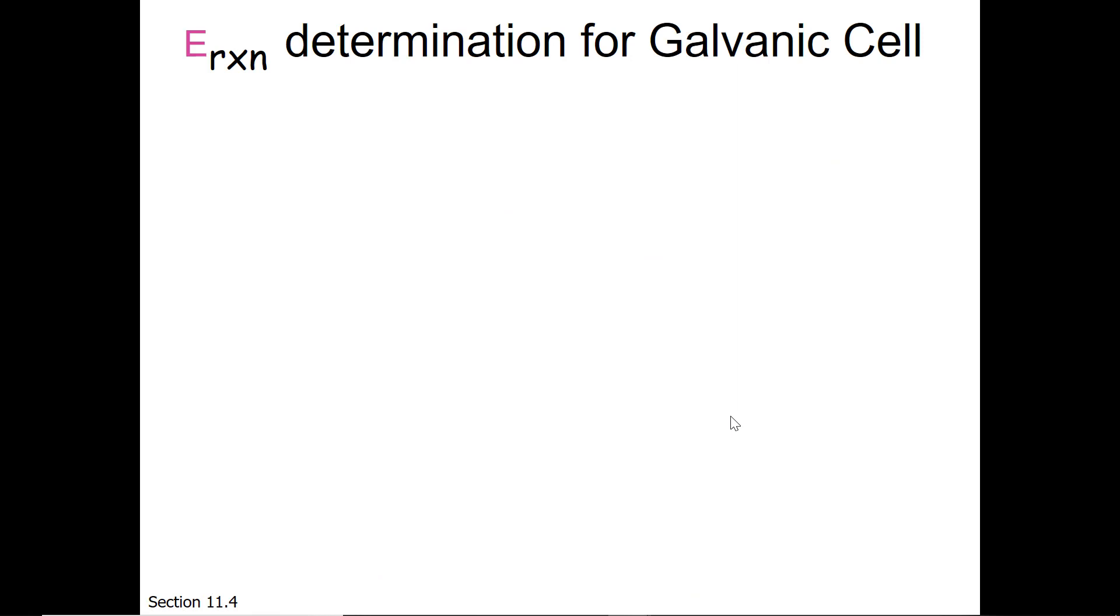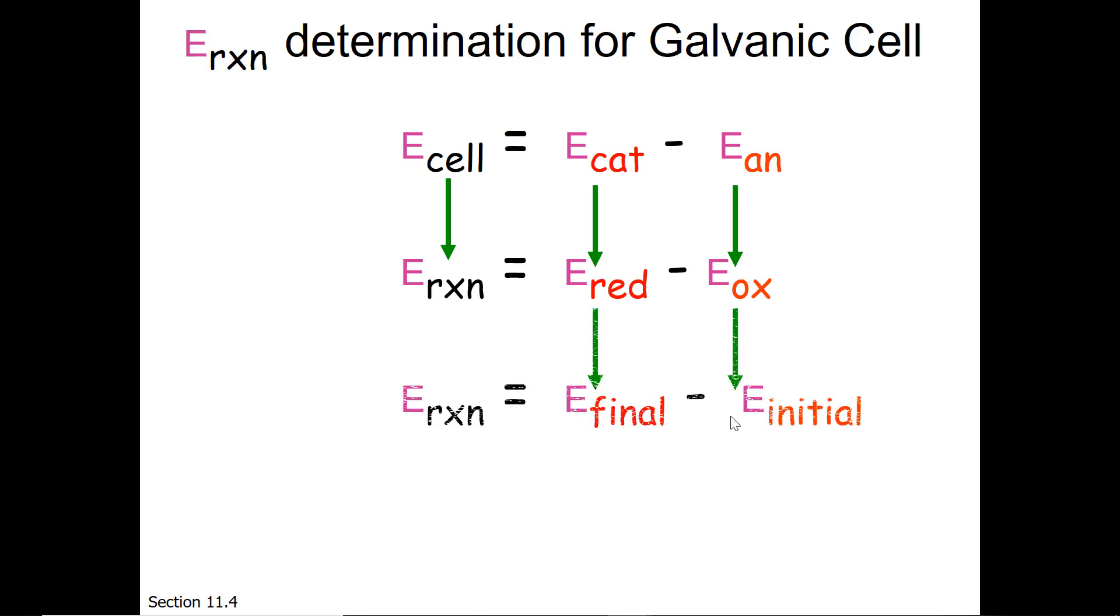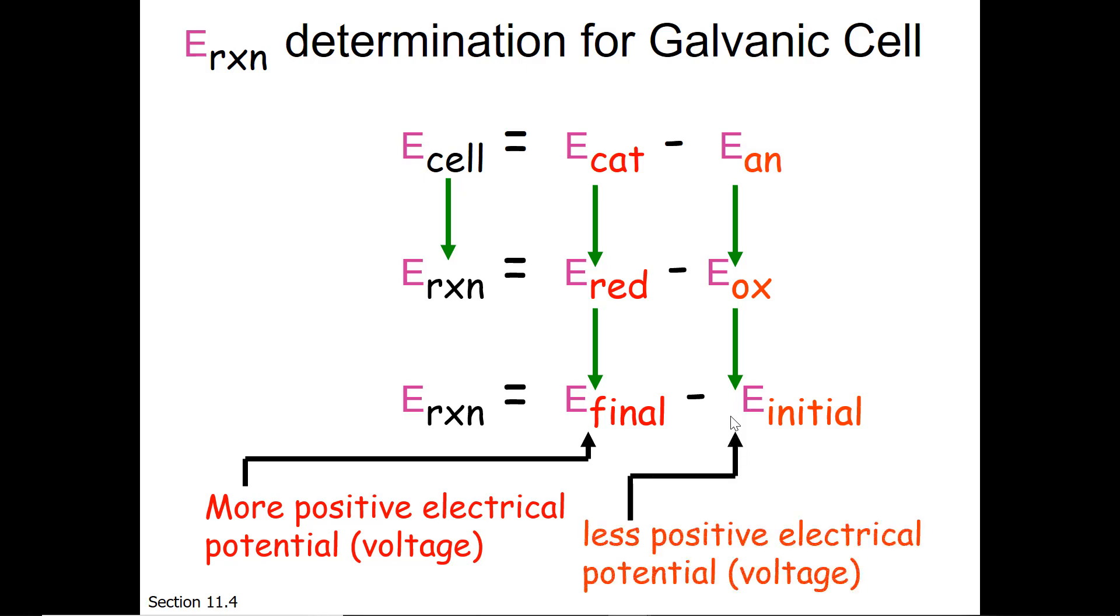What is our E-reaction for that particular galvanic cell? Once again, E-cell is E-cathode minus E-anode, or since reduction occurs at the cathode, it could be E-reduction minus E-oxidation, because oxidation occurs at the anode, or E-final minus E-initial. So typically for a galvanic cell, we are taking the more positive electrical potential or voltage and subtracting the less positive electrical potential.